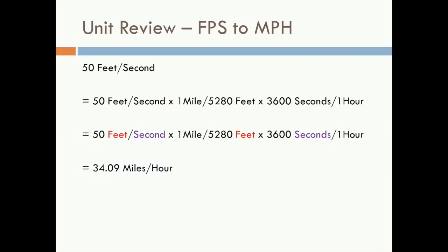Now let's work the other direction. We use the same conversion factors, but we need their inverse, because we want to convert feet into miles and seconds into hours. Multiplying 50 feet per second by 1 mile per 5280 feet, then multiplying again by 3600 seconds per hour, puts feet and seconds in both the numerator and denominator, and we're only left with miles in the numerator and hours in the denominator. We get an answer of 34.09 miles per hour.